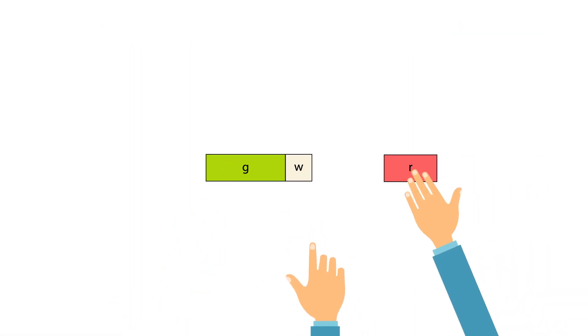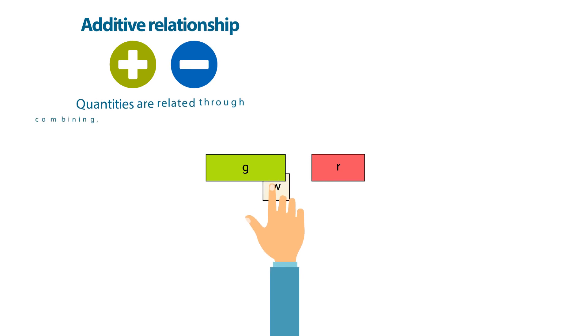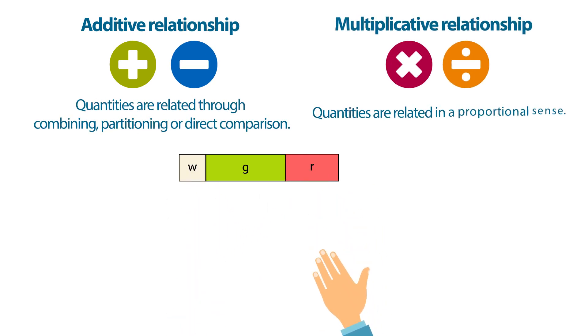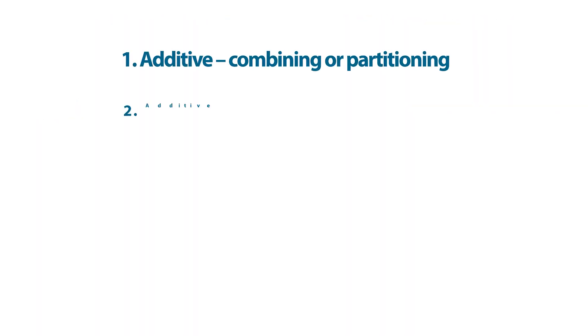We can place Cuisenaire rods end-to-end to model additive and multiplicative relationships. Let's look at some examples.